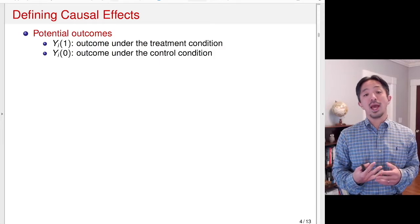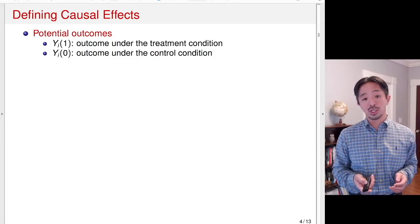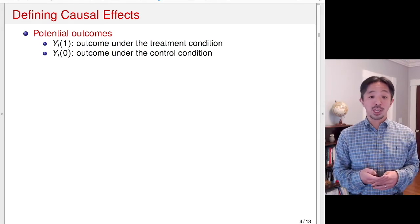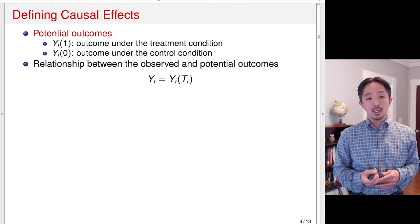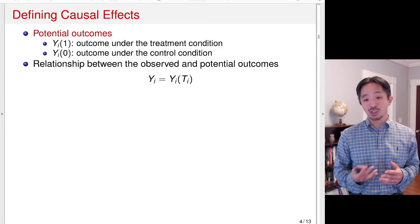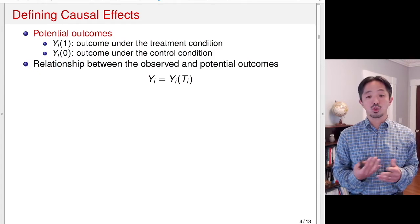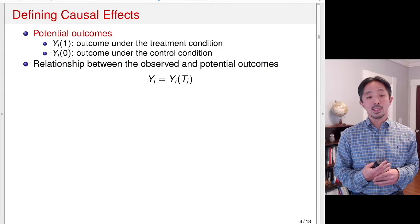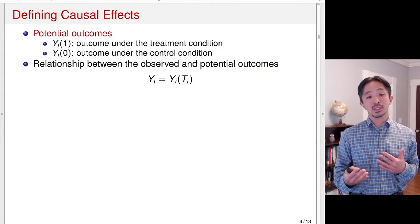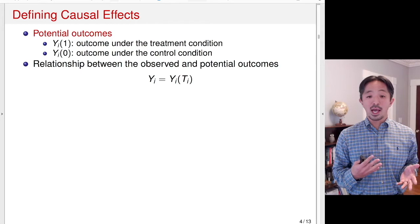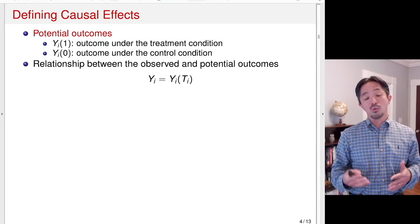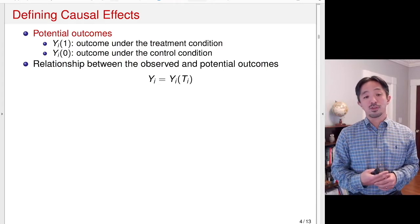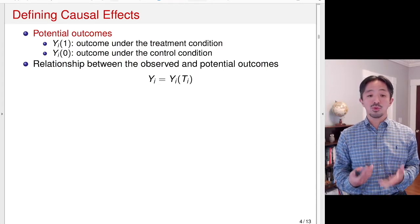Y(0), on the other hand, represents the outcome under the control condition — it's the turnout of the voter if he or she is not canvassed. The relationship between the observed and the potential outcomes is controlled by the treatment variable Ti. So depending on treatment status, the observed outcome Yi is either equal to Y(1) or Y(0). If the voter is treated, we observe Y(1); if the voter is in the control condition, we observe Y(0).